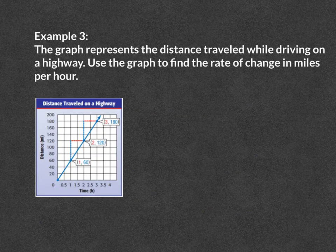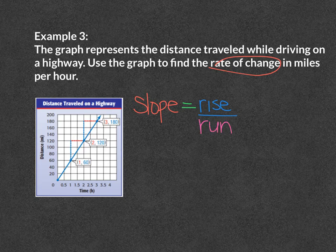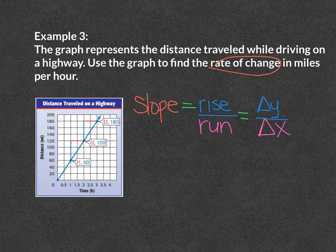Example number 3. The graph represents the distance traveled while driving on a highway. Use the graph to find the rate of change in miles per hour. Remember our rate of change is the same thing as slope, and our slope is rise over run, which is the same thing as our change in y over our change in x. I am going to start by taking two points: the first point is (1, 60) and the second point is (2, 120). I am going to start with my rise, which is my change in y.